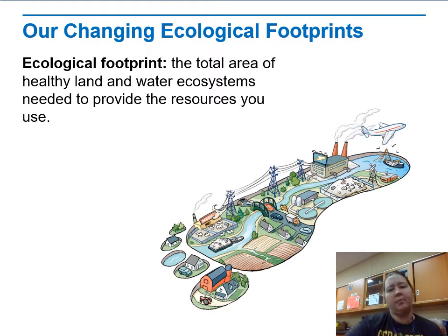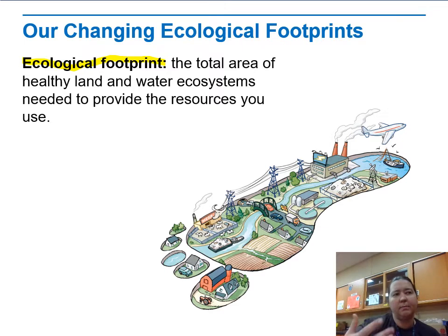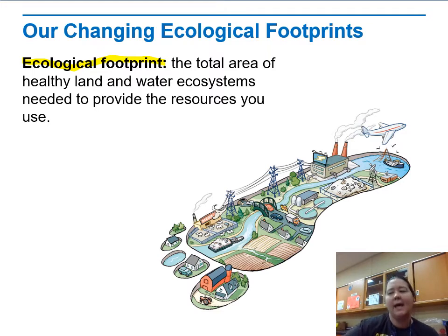The ecological footprint is the total area of healthy land and water ecosystems needed to provide the resources that you use. It basically means how many Earths do we need to live the way you live. People are largely unaware of their ecological footprint and of what we do and how it interacts with the environment — just because we've advanced in a way that lets us step back from the natural world. We have houses, clothes, things that keep us separate; we don't have to hunt our food.